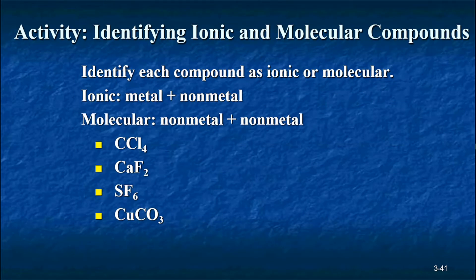Okay, so let's do this exercise here. I'm going to show you four formulas here and I want you to identify each compound as being ionic or molecular. Remember, our strategy is to identify if there is a metal involved in here. If there is a metal element, then we're going to label it as ionic. And if there aren't any metal elements involved, then we'll label it as molecular. Let me give a few seconds to look at these four formulas and let me see what you come up with.